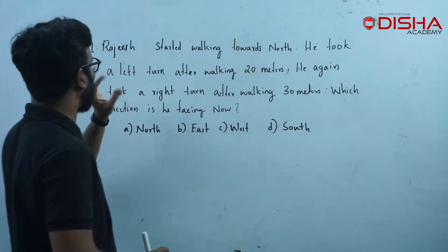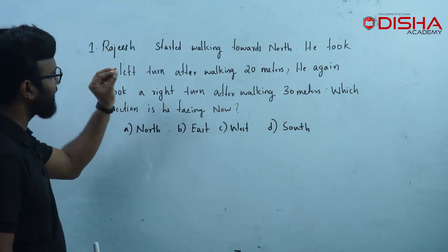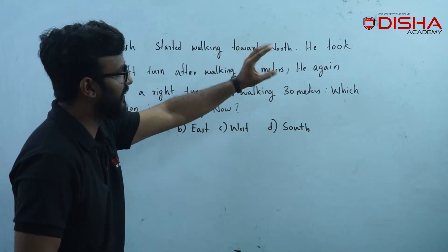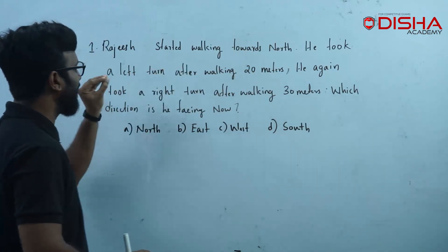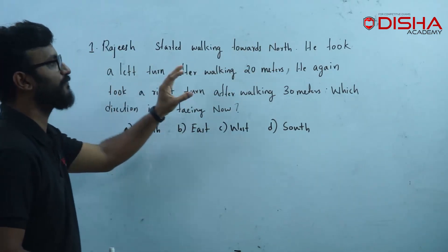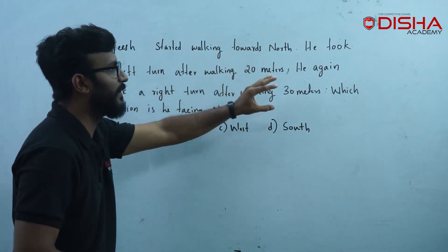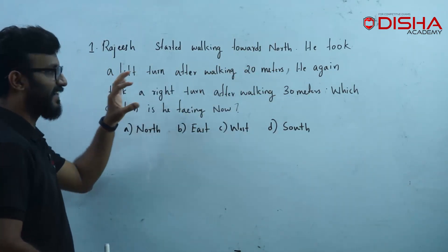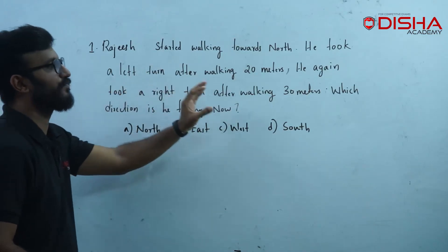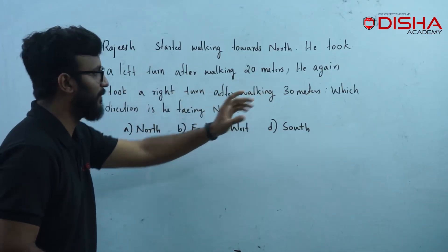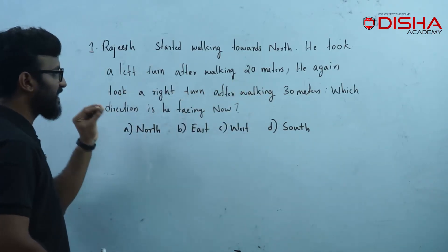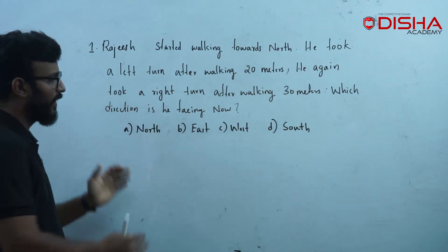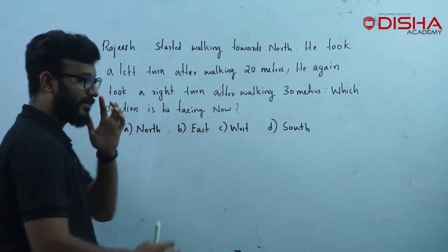The next question is: Rajesh started walking towards north. He took a left turn after walking 20 meters. He again took a right turn after walking 30 meters. Which direction is he facing now? We have four options.